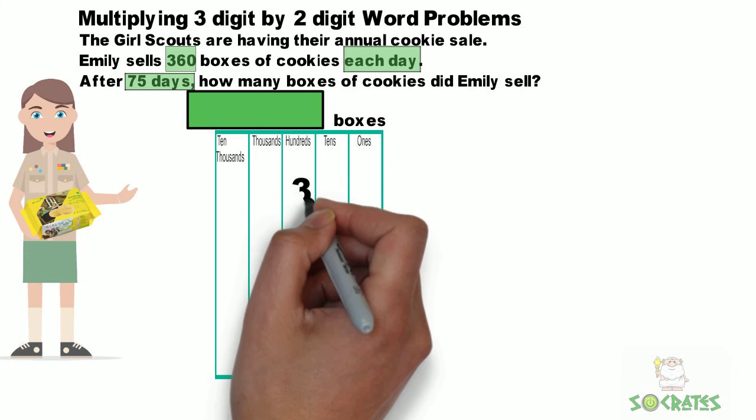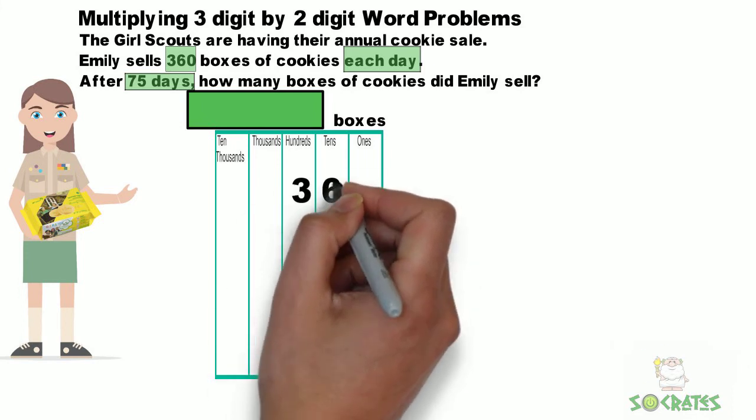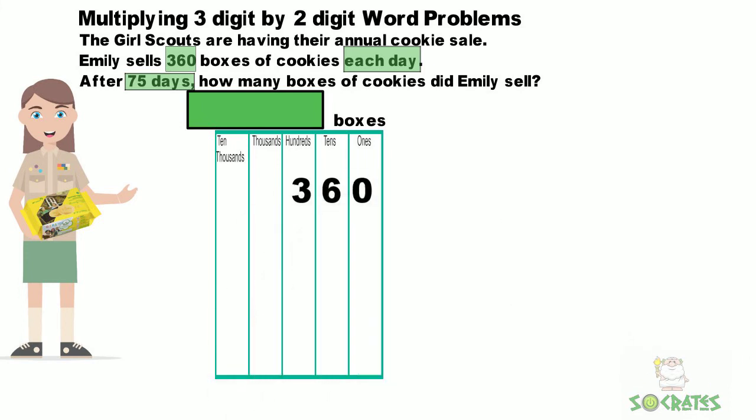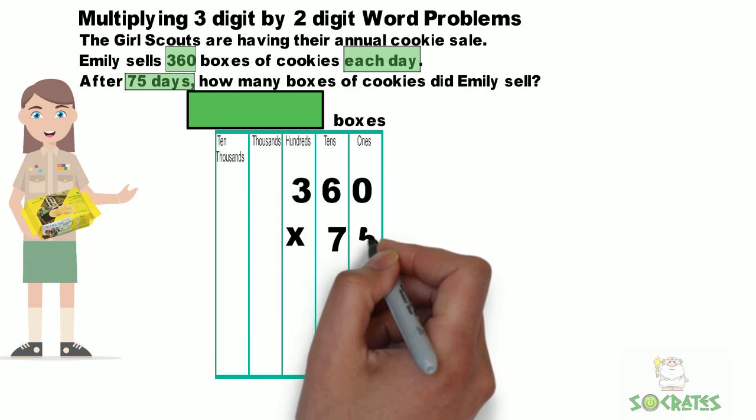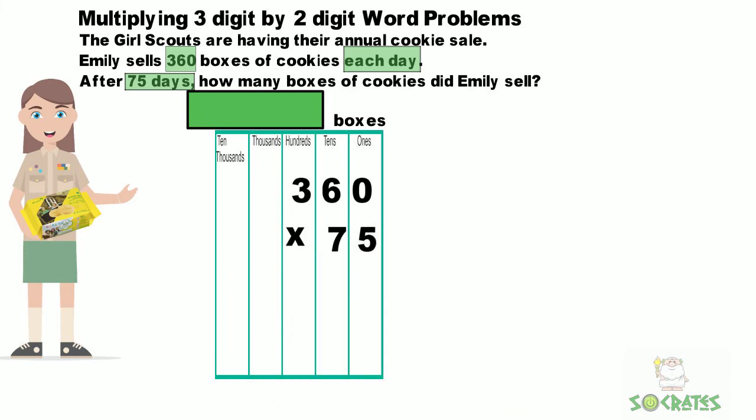Use your place value chart — it can help you organize your multiplication problem. 360 times 75.